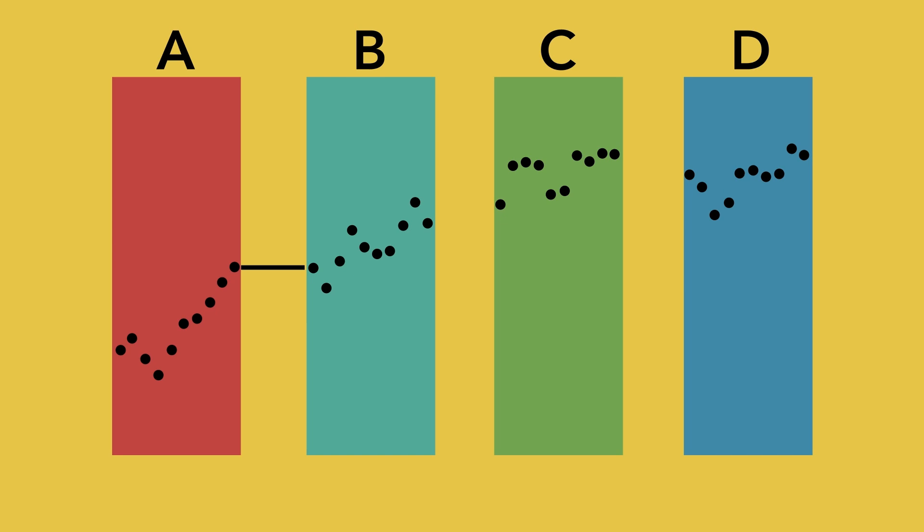Notice how the ending sample point of token A connects smoothly to the beginning sample point of token B. The end of B to the beginning of C and so on.